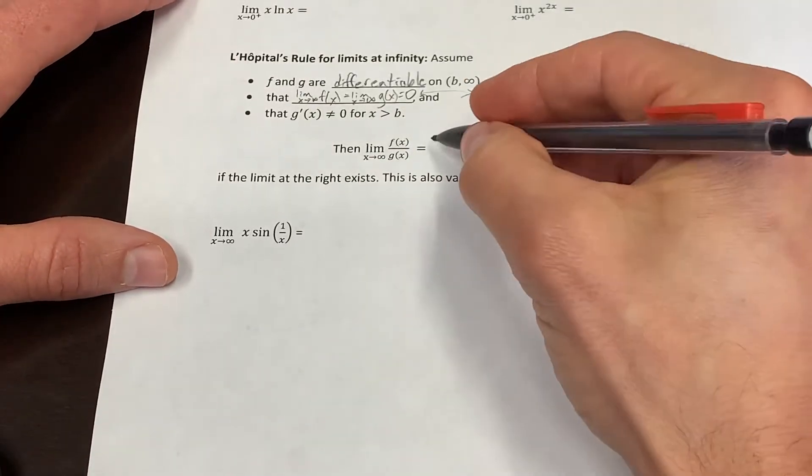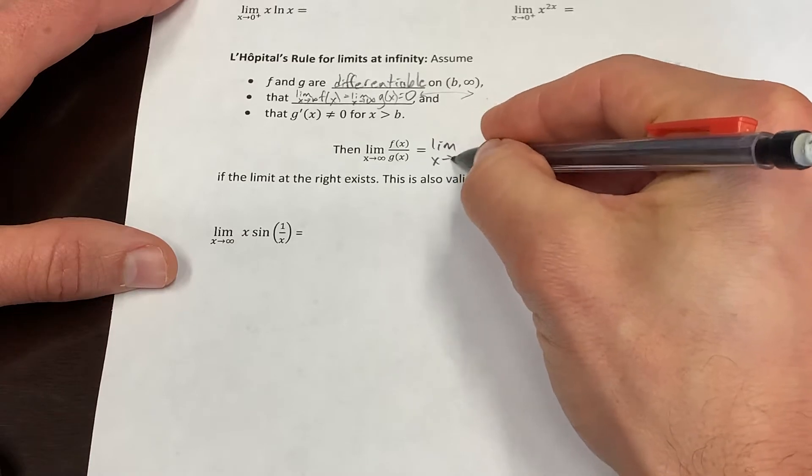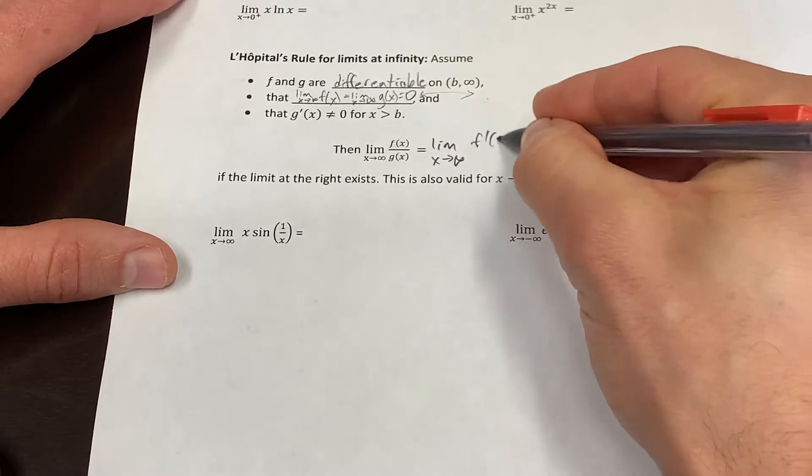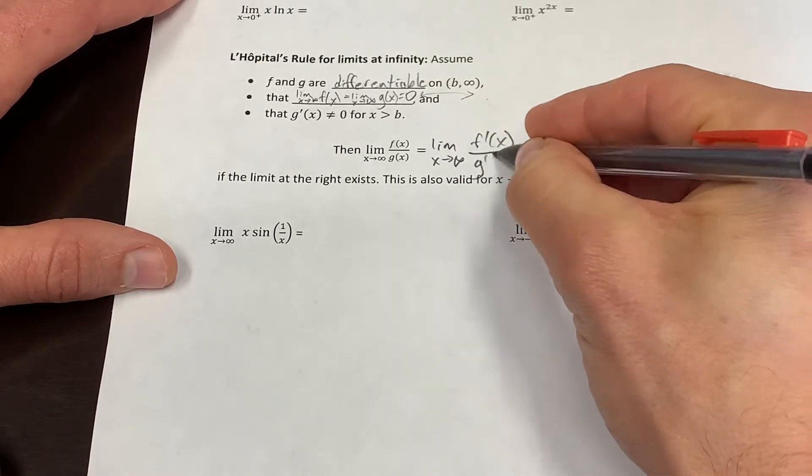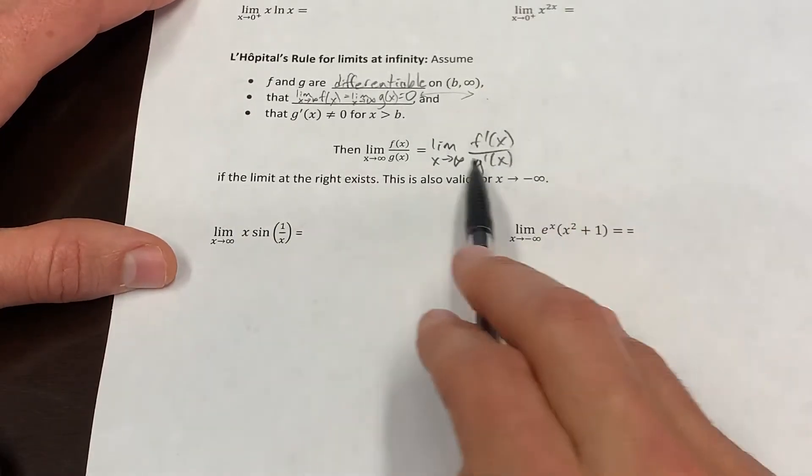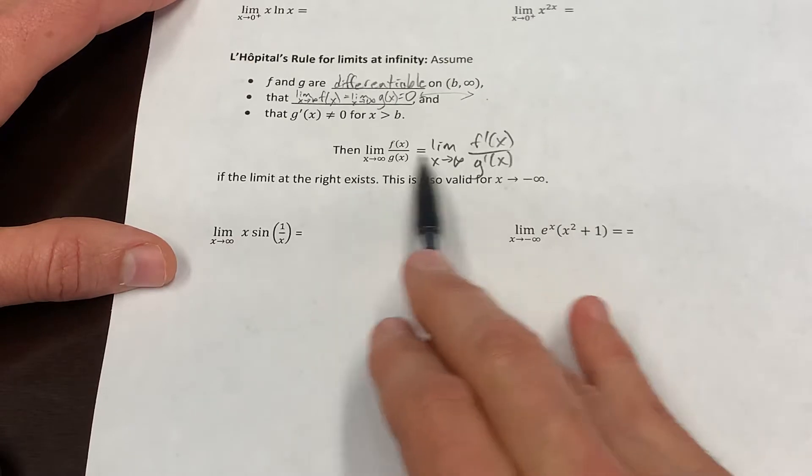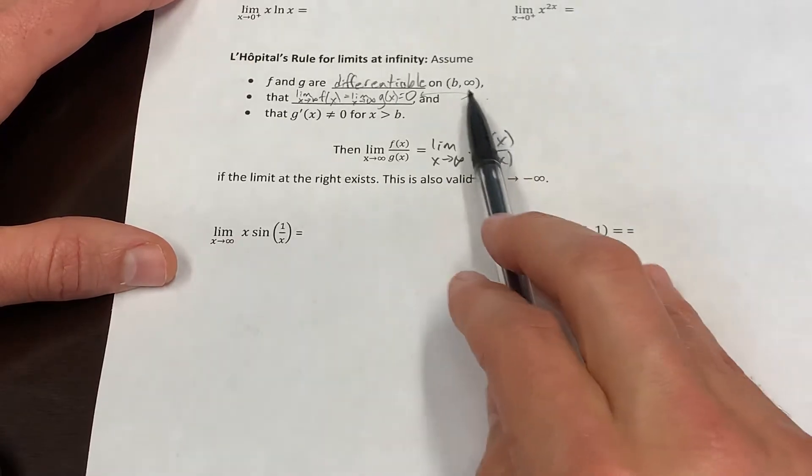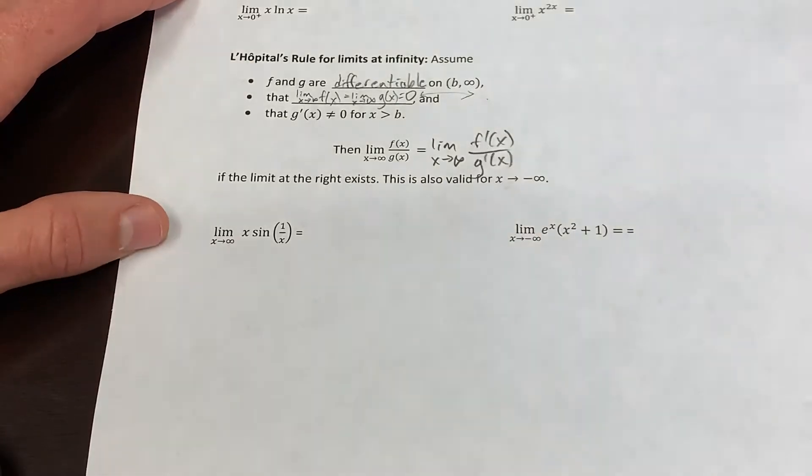Then this limit is actually equal to the limit as x goes to infinity of f prime of x over g prime of x. So the punchline is exactly the same as L'Hôpital's rule if the limit on the right exists. And that also works if you want to put in negative infinities there and an interval that goes off to negative infinity.